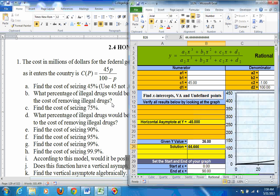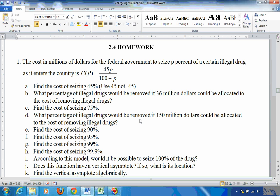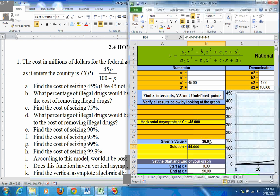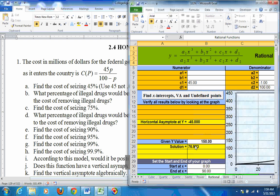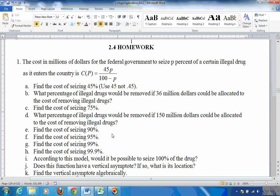Just need to always make sure you think about what value goes in for X and Y. C says find the cost of seizing 75%, so you just put 75 in there for X. D, what percentage of illegal drugs would be removed if $150 million were available? Well, that's giving you the cost, $150 million, so you just put $150 in here because it's in units of millions of dollars, so that 76% could be seized. And then just put these in, 90, 95, 99, and 99.9 in for the P.